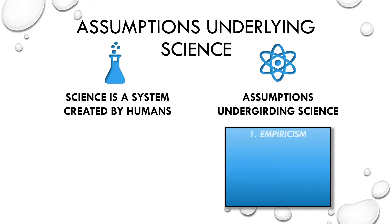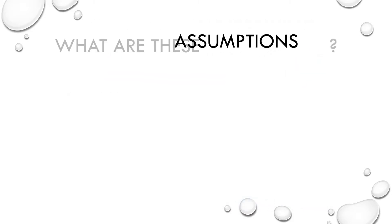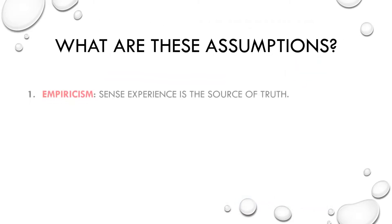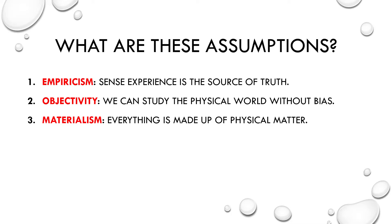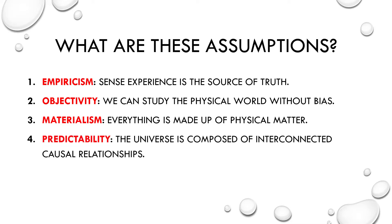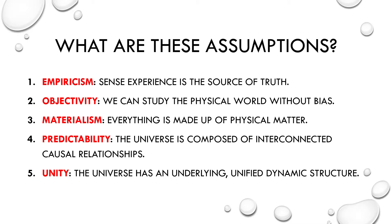These assumptions include empiricism, objectivity, materialism, predictability, and unity. Empiricism is the assumption that sense experience is the source of knowledge and truth. Objectivity — that we can study the physical world around us without bias. Materialism — that everything in the universe is constituted of physical parts. Predictability — that the universe is composed of interconnected and regular causal relationships. And unity — that the universe has an underlying unified dynamic structure.